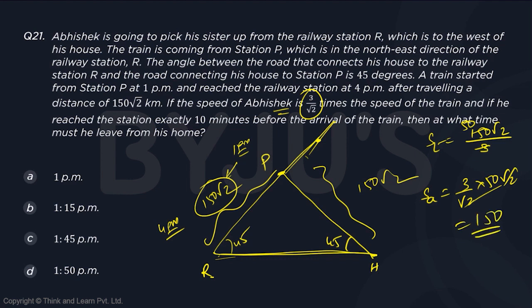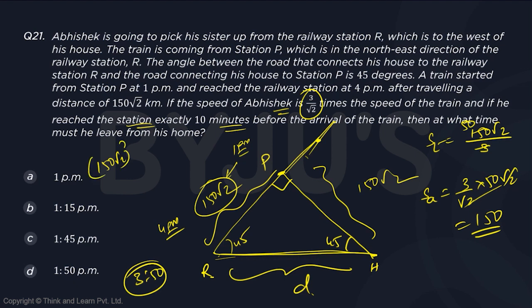If he reaches the station exactly 10 minutes before the arrival of the train, he reached at 3:50. We need to find the distance from his house to the station. It's an isosceles right-angle triangle with angles 45, 45, 90. So, (150√2)² + (150√2)² = 150² × 2 × 2. The hypotenuse — which is the distance — is √(that), which is 150 × 2 = 300.